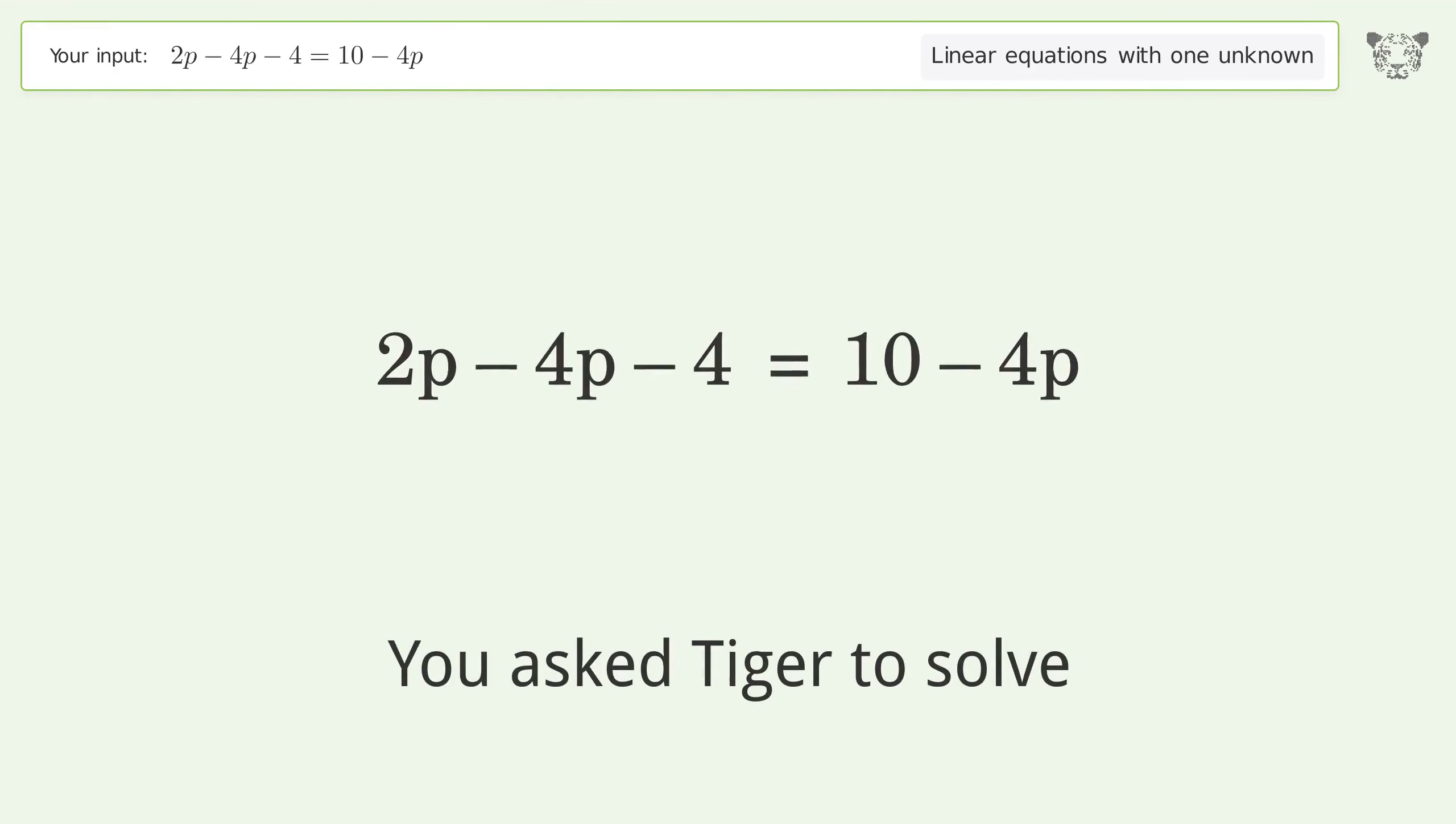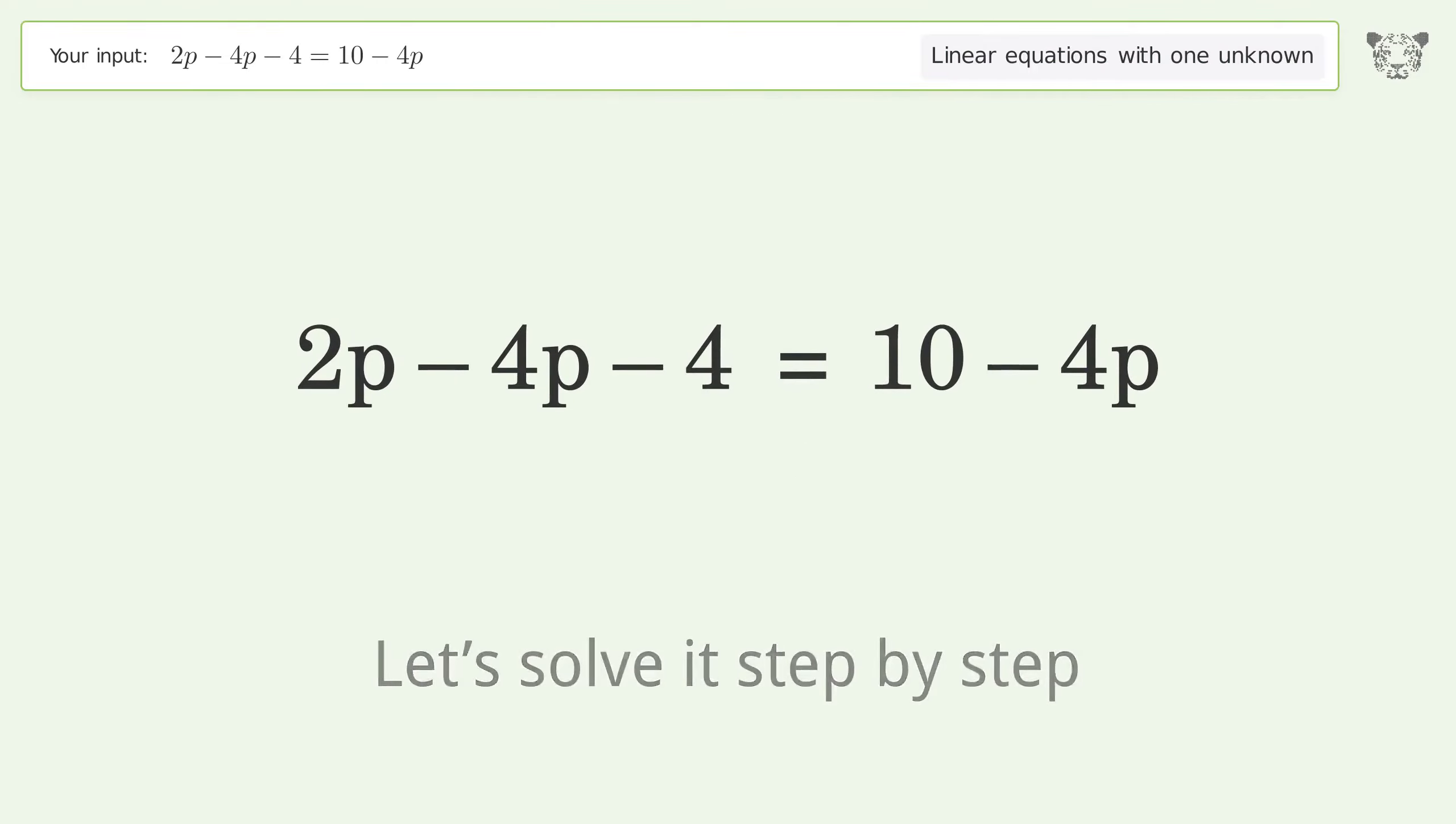You asked Tiger to solve this linear equation with one unknown. The final result is p equals 7. Let's solve it step by step. Simplify the expression, simplify the arithmetic.